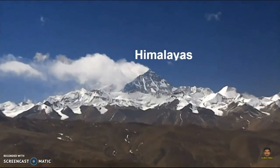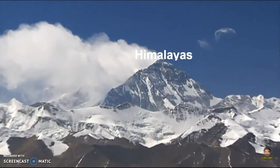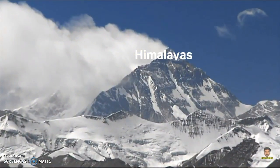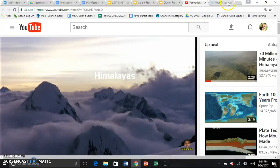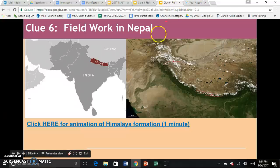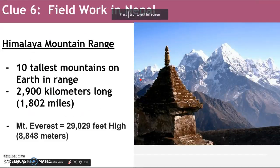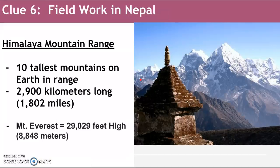Some of the tallest mountain ranges on earth above sea level. The Himalayan mountain range has ten of the tallest mountains on earth above sea level. It's a range that's 2,900 kilometers long. Mount Everest is the most widely known and highest above sea level mountain.